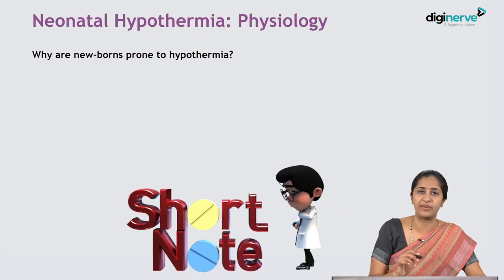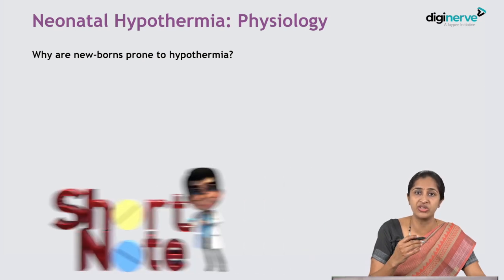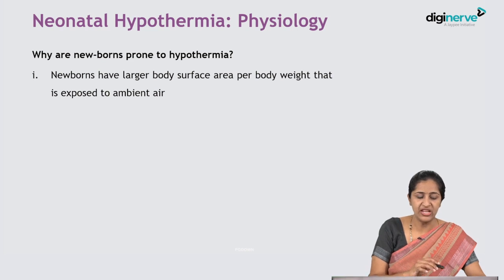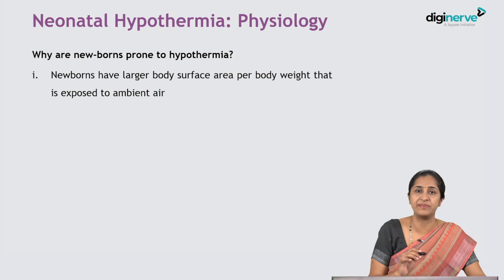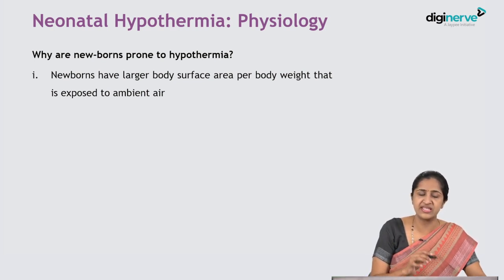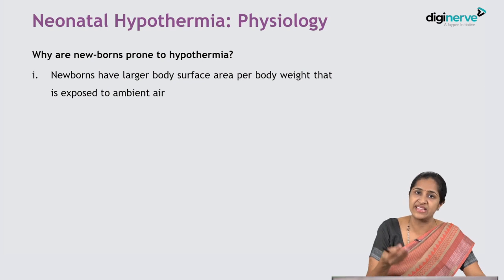Why are newborns prone to hypothermia? Newborns have a larger body surface area per body weight that is exposed to ambient air. Especially, the head is one of the largest portions of the body, covered with wet hair that retains water. This large wet surface area exposed to air is where there is the maximum amount of heat loss and cooling.